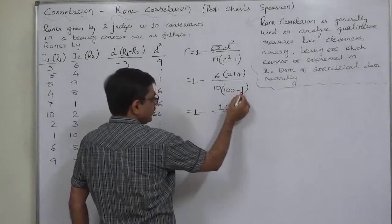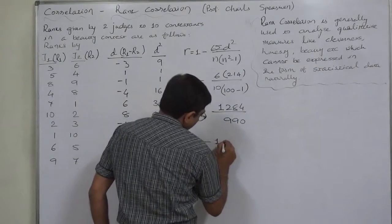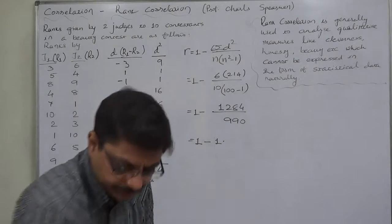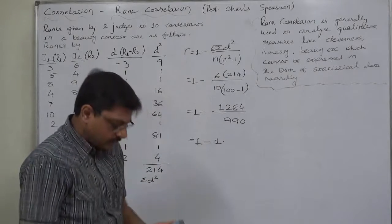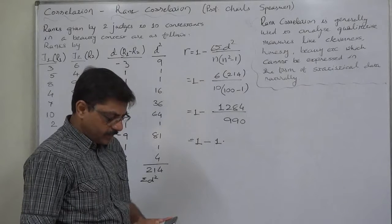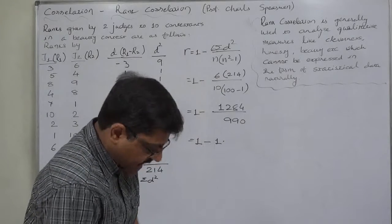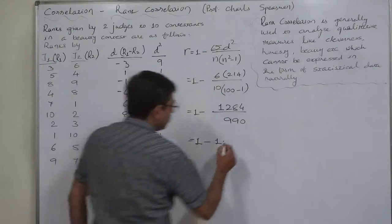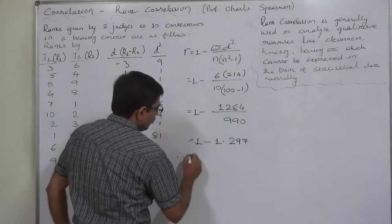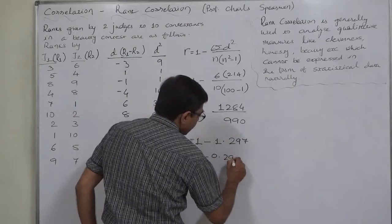100 minus 1 is 99 into 10 is 990. So it will be 1 minus 1284 divided by 990. It comes to 1.297 approximately. 1 minus 1.297. Therefore, the coefficient of rank correlation comes to negative 0.297.